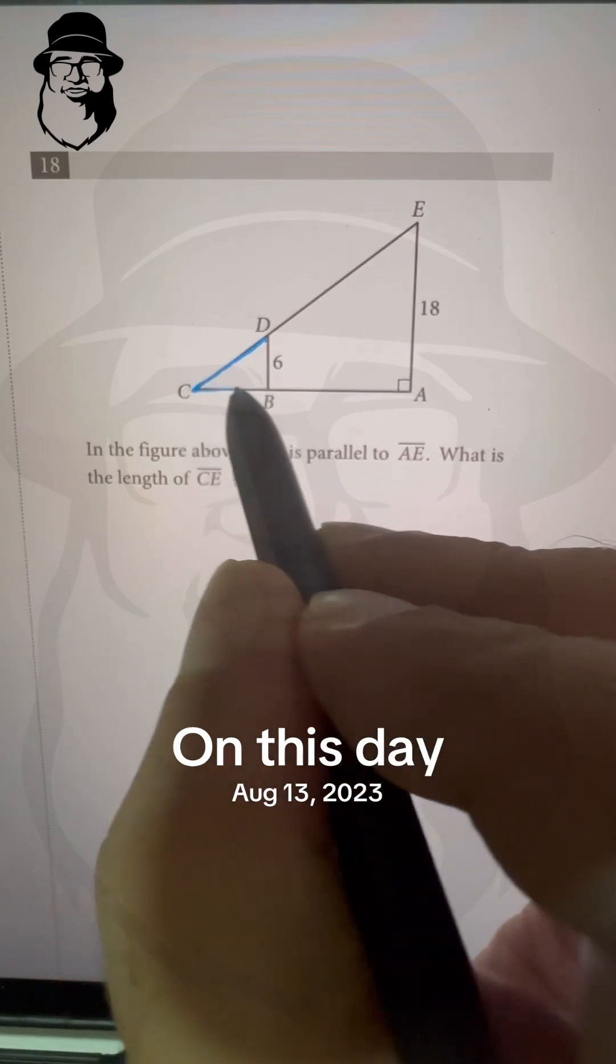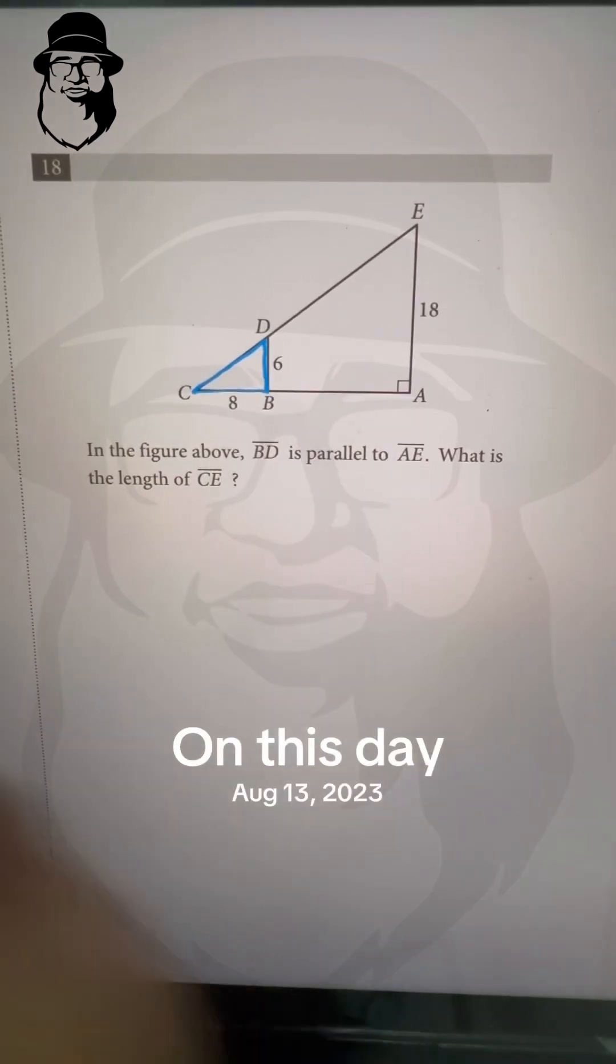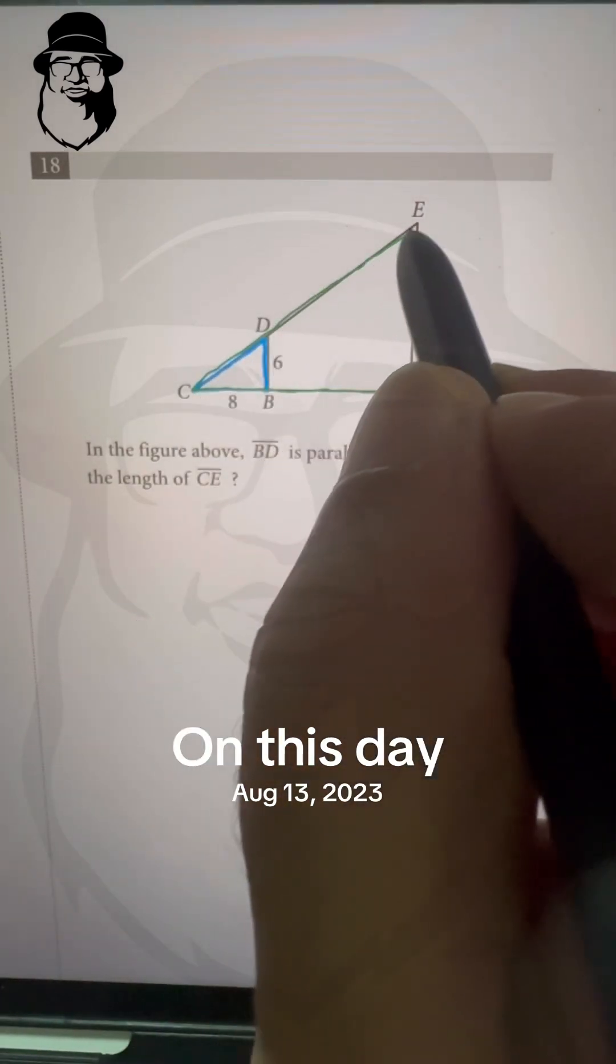That means this triangle, smaller triangle BCD, is parallel to this bigger triangle, ACE. BDE.